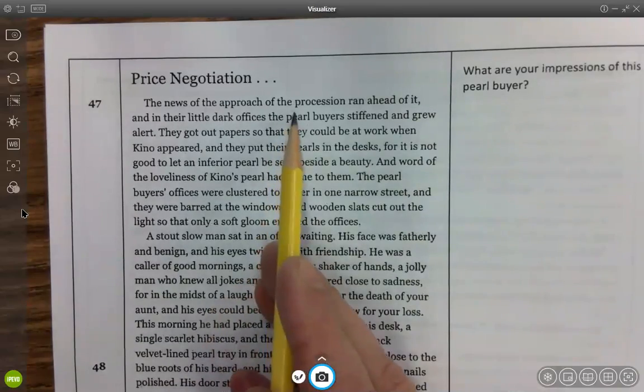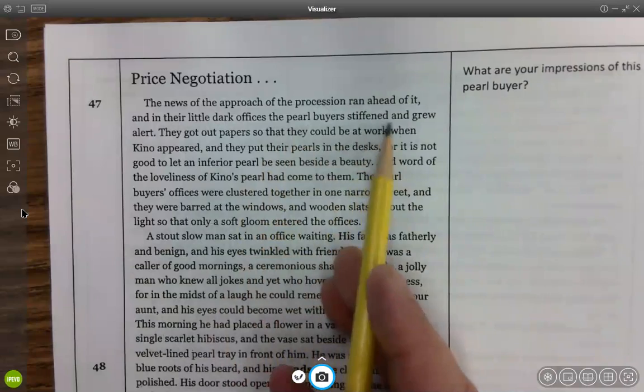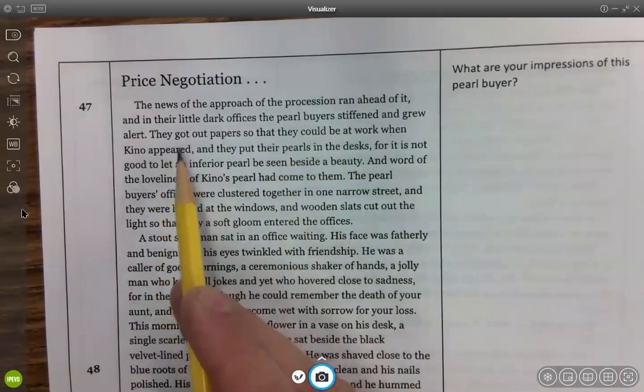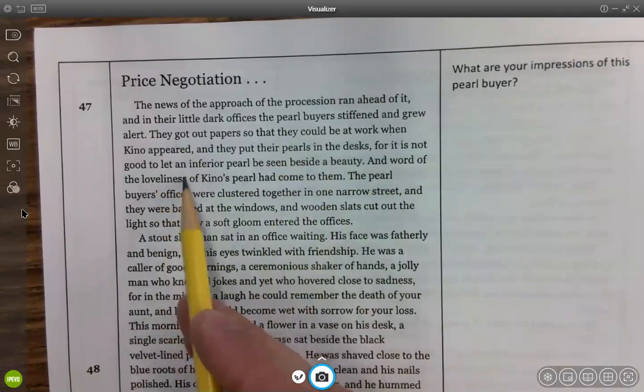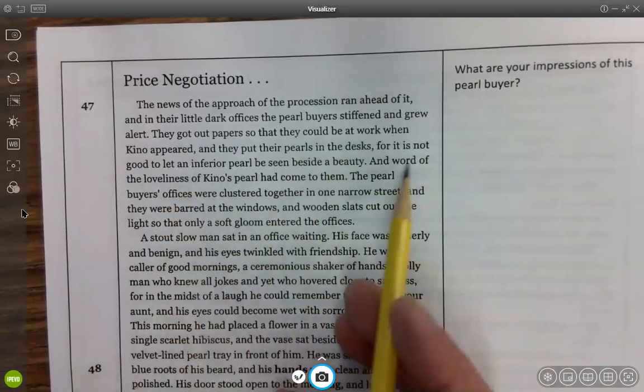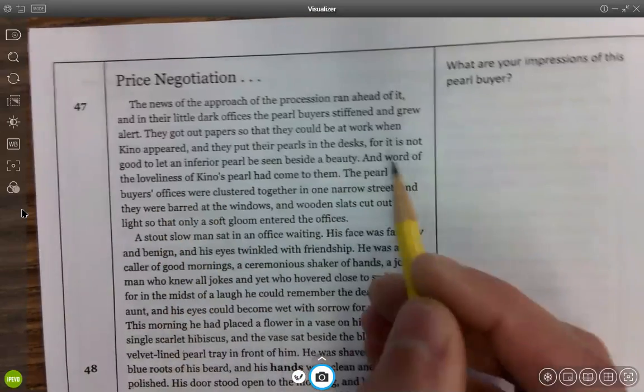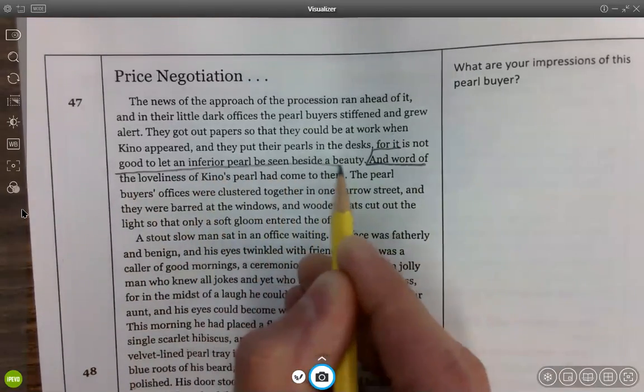So the news of the approach of the procession ran ahead of it. And in their little dark offices, the pearl buyers stiffened and grew alert. They got papers out so they could be at work when Kino appeared. And they put their pearls in the desks, for it is not good to let an inferior pearl be seen beside a beauty. And word of the loveliness of Kino's pearl had come to them.